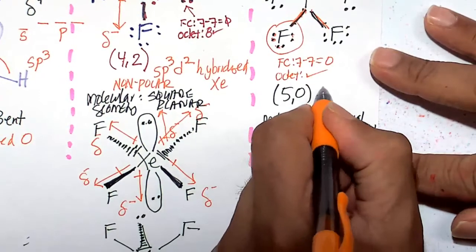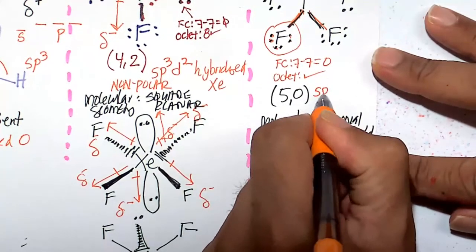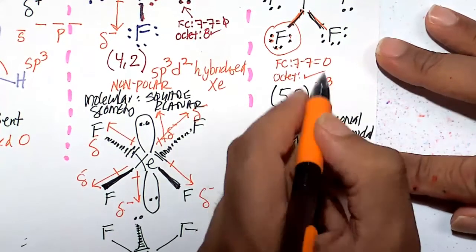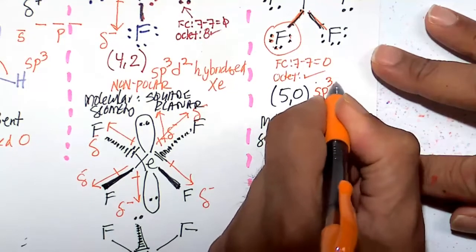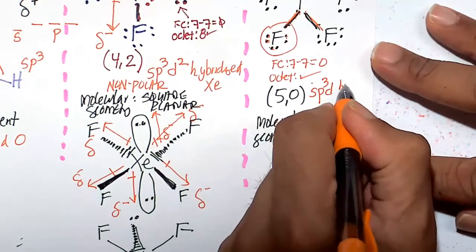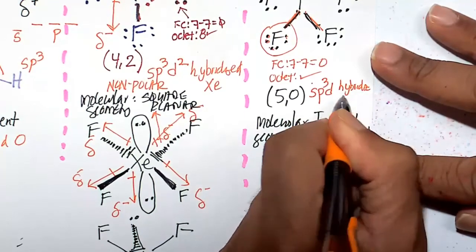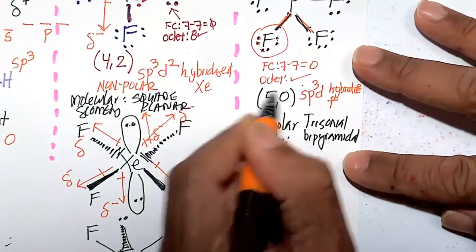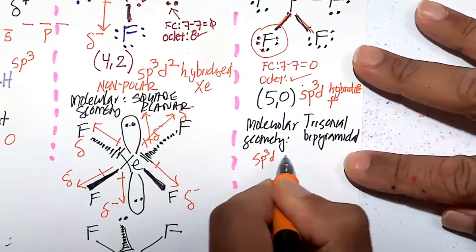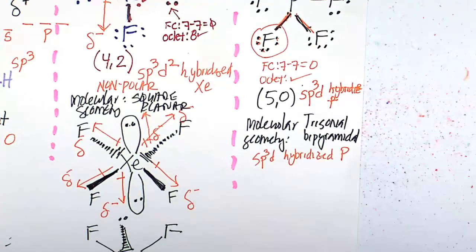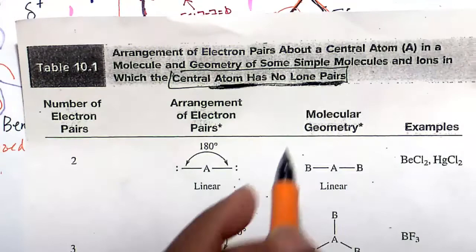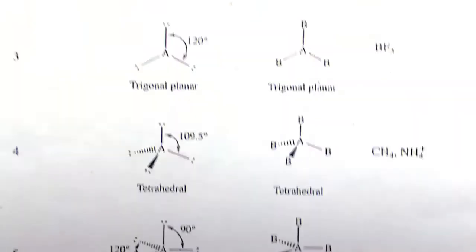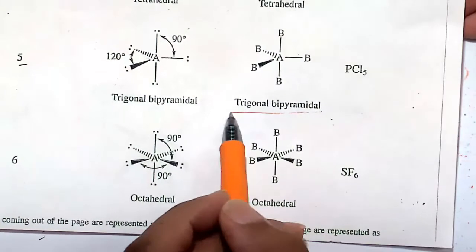So how will we get to 5? We'll take 1 from S. P has 3 slots available to it. So 3 plus 1 is 4. And then one more, we'll take it from the D. So this is an SP3D hybridized phosphorus central atom. Let me see if I can write that a little better down here. SP3D hybridized phosphorus.